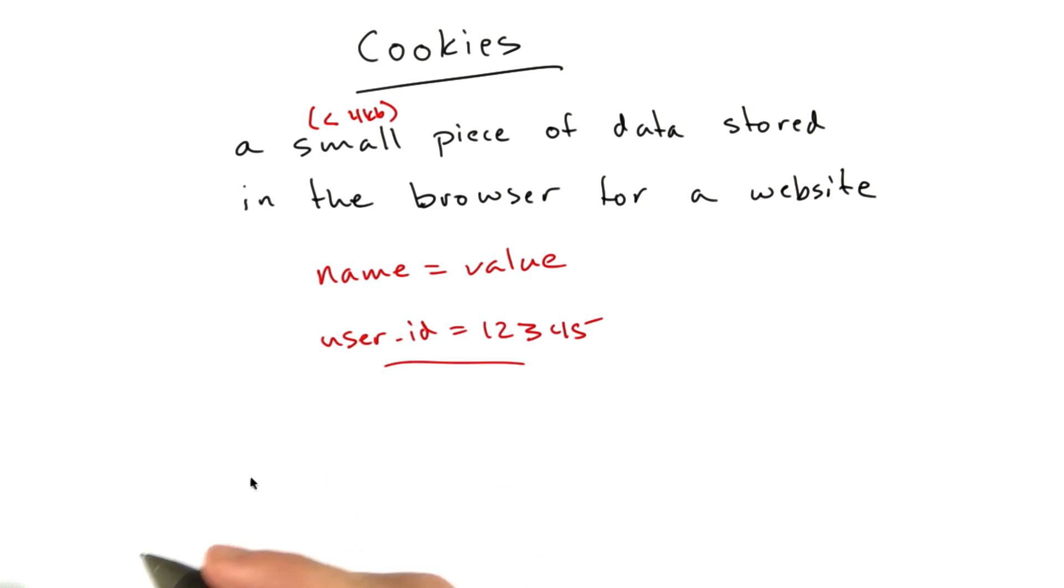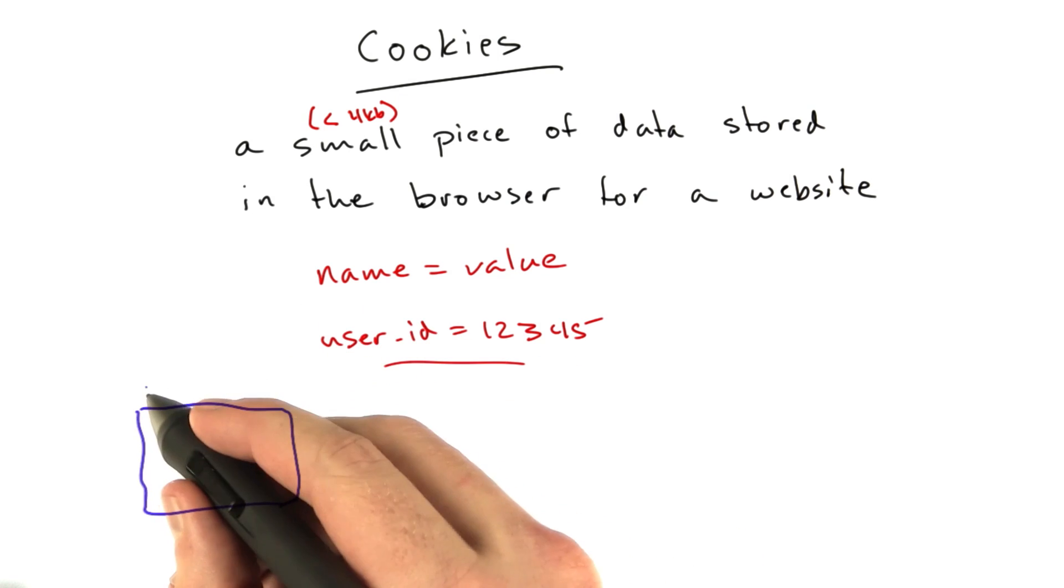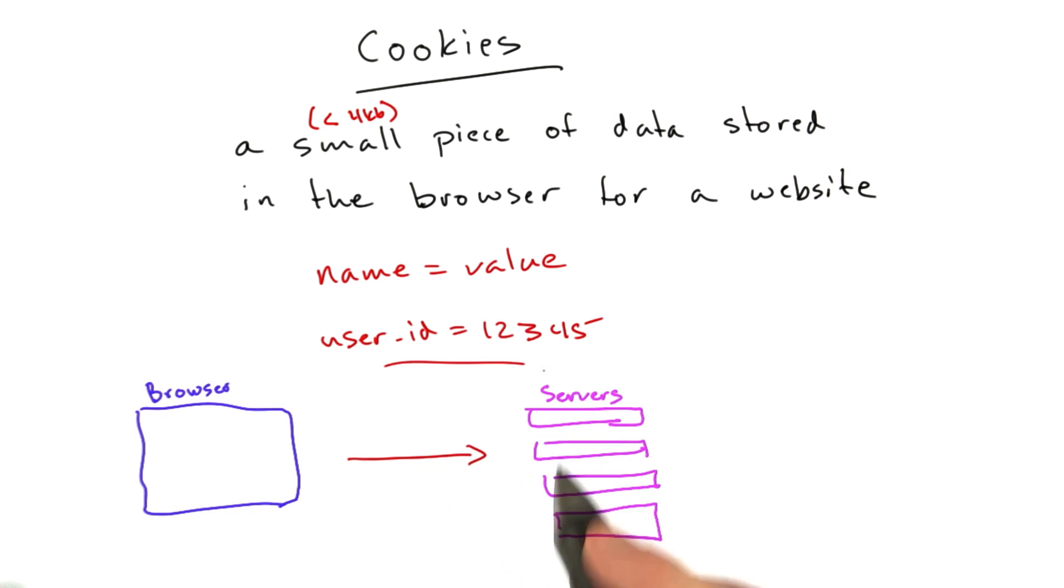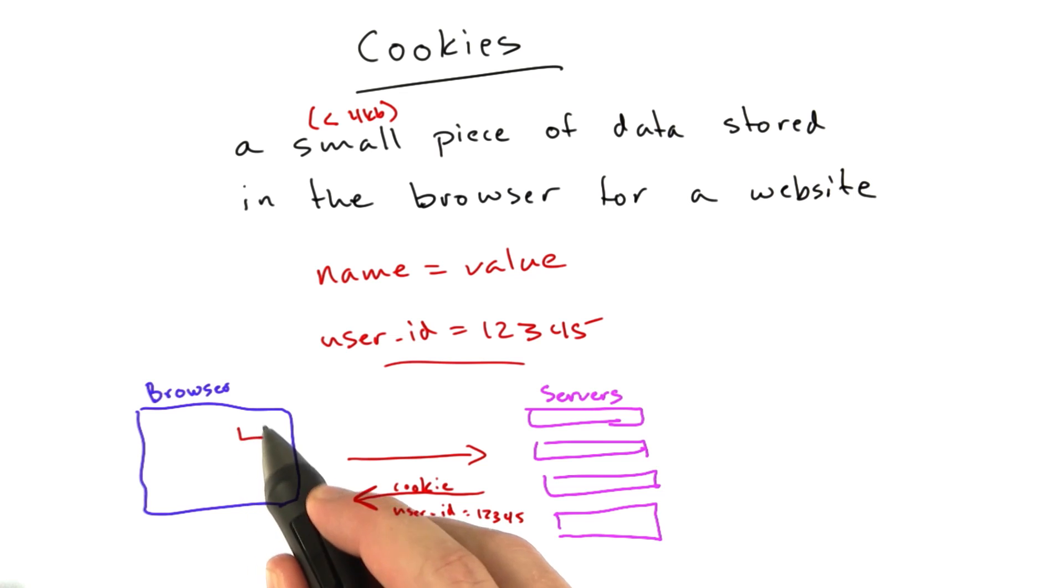So to kind of draw you a little picture of how these things fit together, we might have your browser, and it makes requests to some web servers. And the web server might send back in its response some cookie data. And this is in the form of an HTTP header. And then your browser basically just stores this cookie. It's associated with this website. We'll talk more about that shortly.